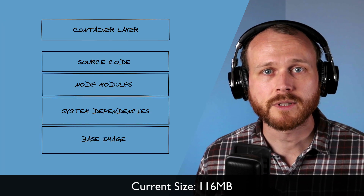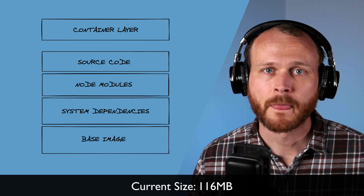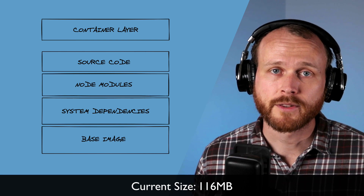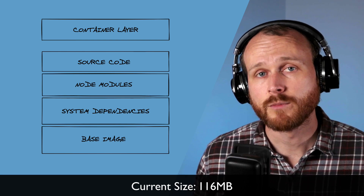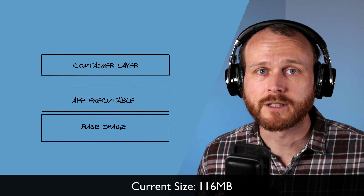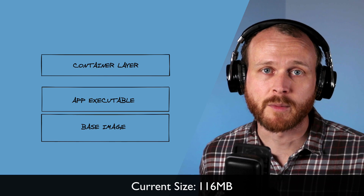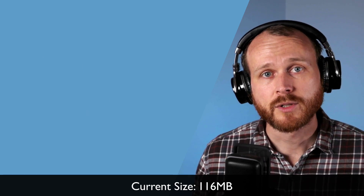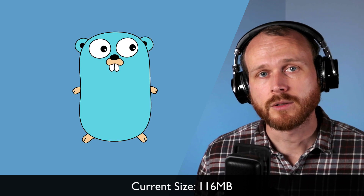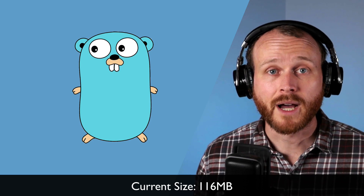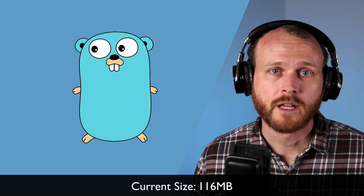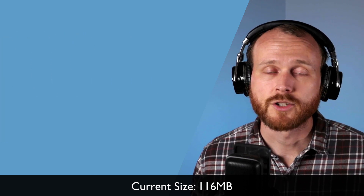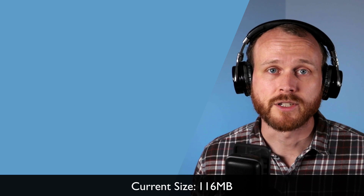Docker containers are additive, so you can only add more layers to the image. To improve further, we're going to need to move to a language where we don't have to include so many runtime dependencies. For writing web services, one common choice is Golang. Golang can be compiled into a standalone executable, which should allow us to shrink down our image even further.